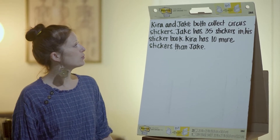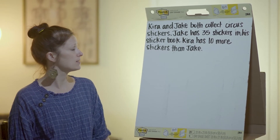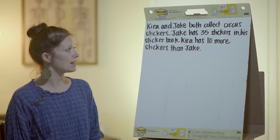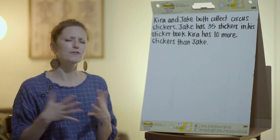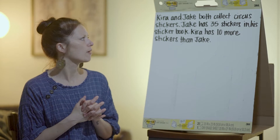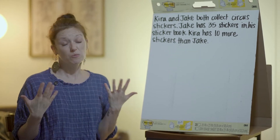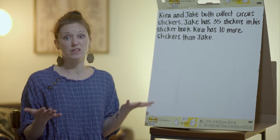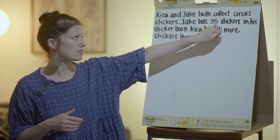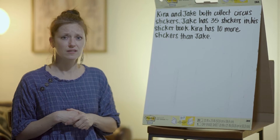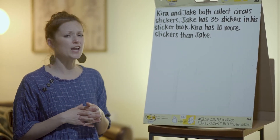So Kira and Jake both collect circus stickers. Jake has 35 stickers in his sticker book. Kira has 10 more stickers than Jake. So what information do we know from this problem? Well, we know that Kira and Jake both collect circus stickers. We know that Jake has 35 stickers. And we also know that Kira has 10 more stickers than Jake.